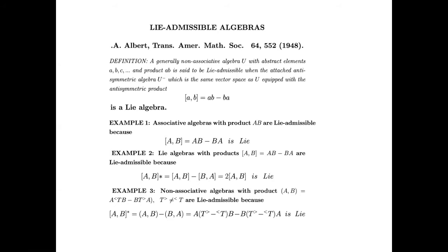Albert introduced in the same paper the complementary notion of Jordan admissibility, which occurs when the attached symmetric algebra U+, characterized by the bracket AB plus BA, characterizes a Jordan algebra. I discovered that the parametric deformation of Lie algebra is not only Lie admissible but also jointly Jordan admissible. This was important because it gave me the possibility of studying the realization of what is called Jordan's dream — Jordan introduced this algebra in the hope of finding physical application, but none could be found.